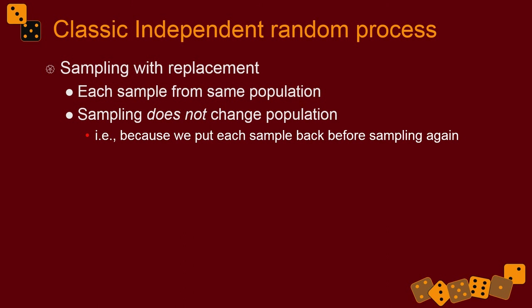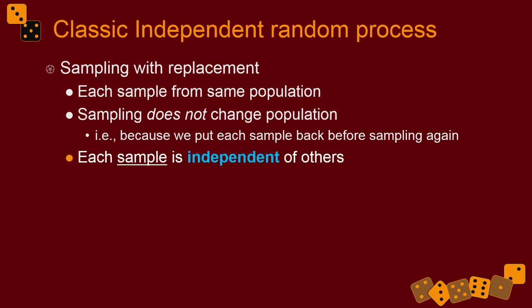Generally, sampling with replacement means we put each sample back in. You sample one individual from the emphysema population — they're in your study — but person number one has to be a possibility for person number two. This is the only way to make each sample truly independent of the others, or each observation in your sample truly independent of all other sampled individuals.